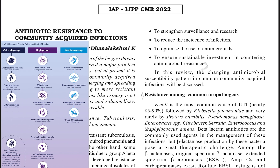Recognizing this threat, the WHO came up with a bacterial priority pathogens list. This started somewhere around 2015-17, when they came up with the first set. In 2024, they have revised the list. They have given a list of resistant organisms and categorized them into critical, high risk, and medium risk groups.